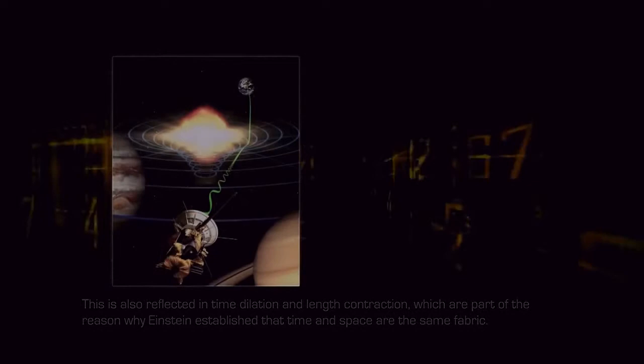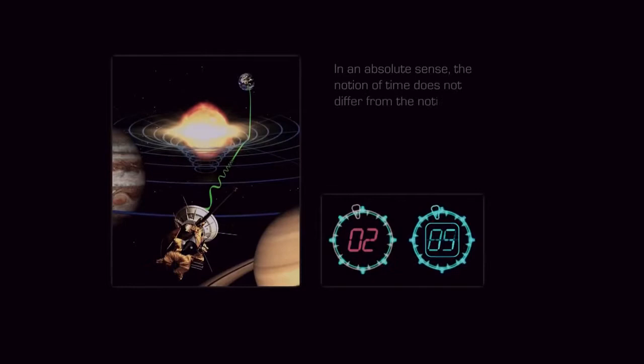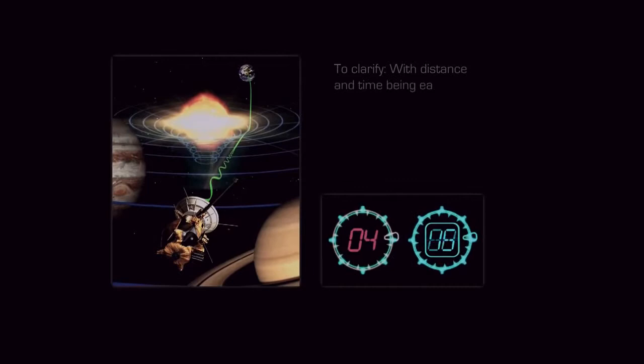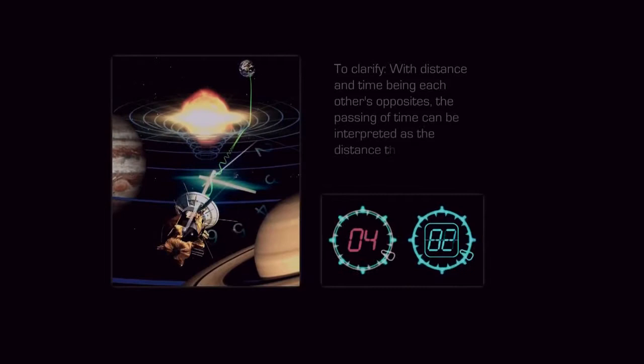In an absolute sense, the notion of time does not differ from the notion of distance. Seconds are equal to light seconds but cancel each other out. To clarify, with distance and time being each other's opposites, the passing of time can be interpreted as the distance that the hands of a clock travel as they move in a direction that is opposite to time.